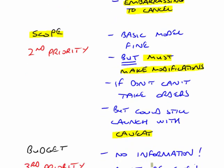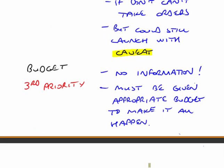One part of the triple constraint that's not mentioned at all within the scenario is budget. Nothing is mentioned about how much money they have spent or how much more they have to spend — no information whatsoever. If I were in the exam, I might be thinking: what on earth do I write? Really, all we can say about budget is they must be given an appropriate budget to make this all happen. In other words, if management considers timeframe and scope to be the two priorities, then the budget may have to be substantial in order for that to happen, especially given the short timeframe of only two to three months.